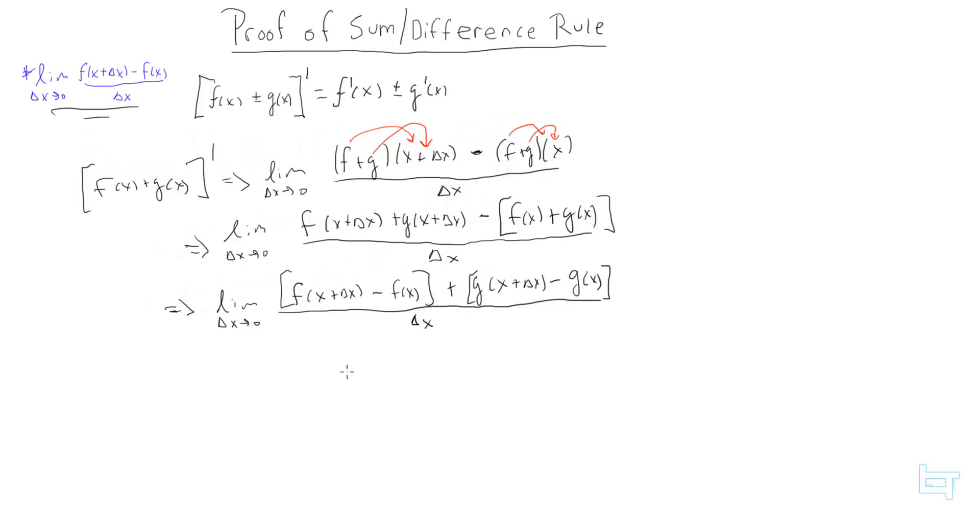Basically, we're done. We're just going to break down the limits according to limit properties. We could put the limit here and we could put the limit here. So to break it down, it's limit as delta x approaches zero, I'm just going to copy the first part, plus the limit.